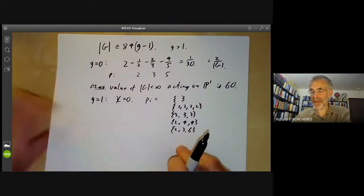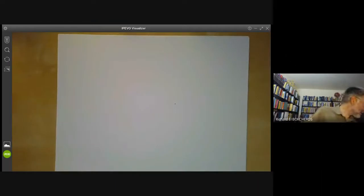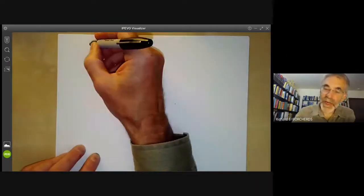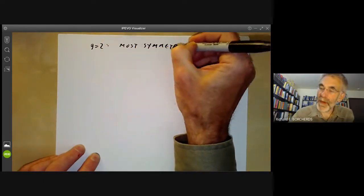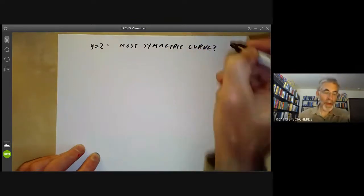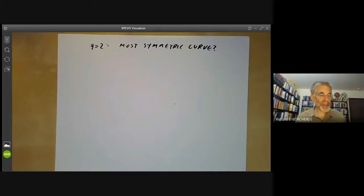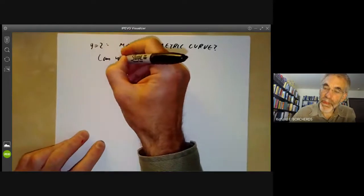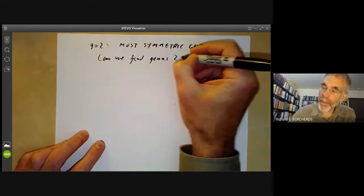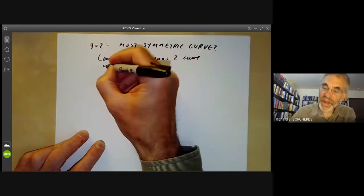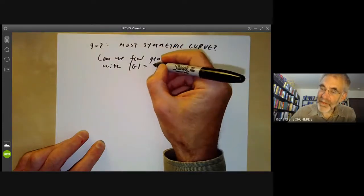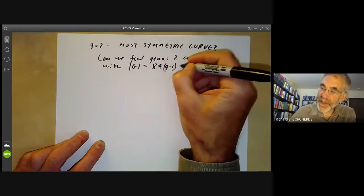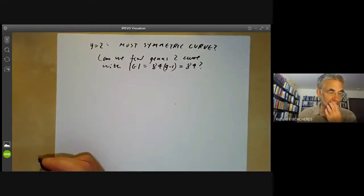So that's done the case of genus zero and one. Now let's look at genus G equals two, and we want to find the most symmetric curve of this genus. So first of all, we can ask: can we achieve Hurwitz's upper bound? So can we find a genus two curve with automorphism group G of order 84 times G minus one, which in this case is just 84? And the answer is no.